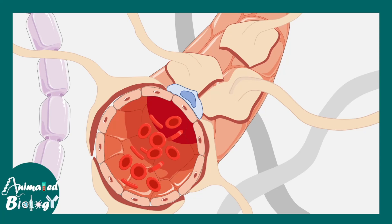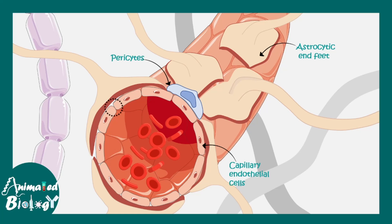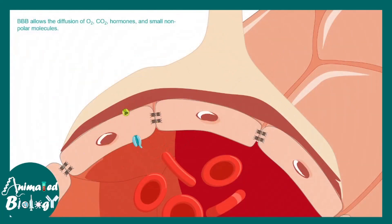Here is what one portion of the blood-brain barrier looks like. This is a blood vessel — you can see the capillary endothelial cells, the astrocytic endfeet, and the pericytes, all of which form the blood-brain barrier. At the molecular level, the blood-brain barrier is constituted by tight junctions between the endothelial cells. This allows diffusion of CO2, O2, hormones, and small polar molecules, but prevents the passage of a plethora of other molecules.